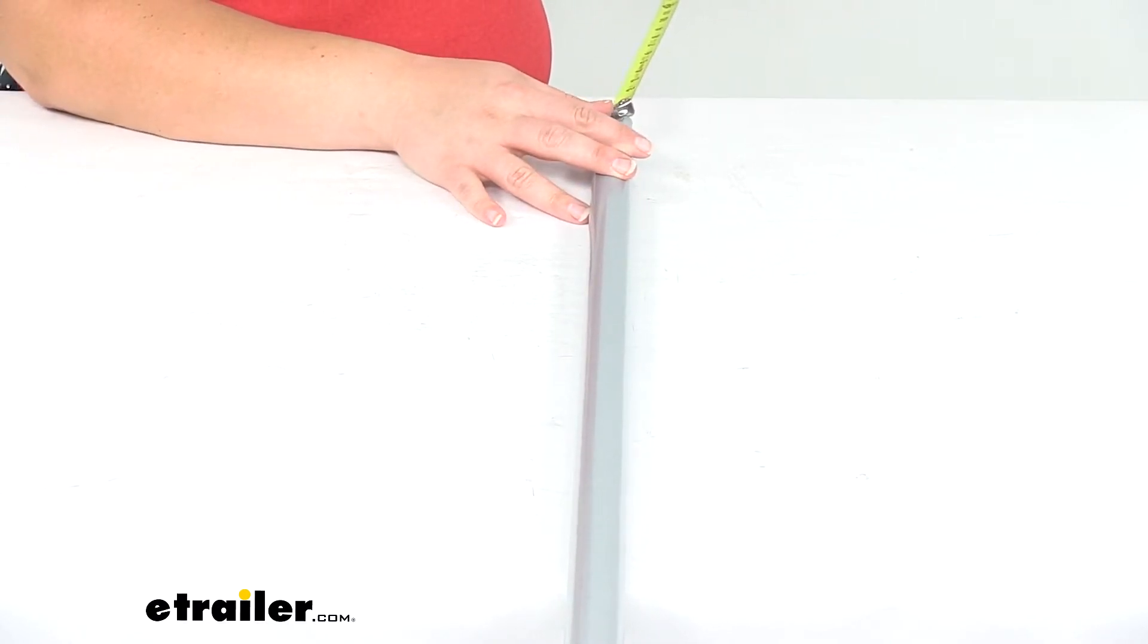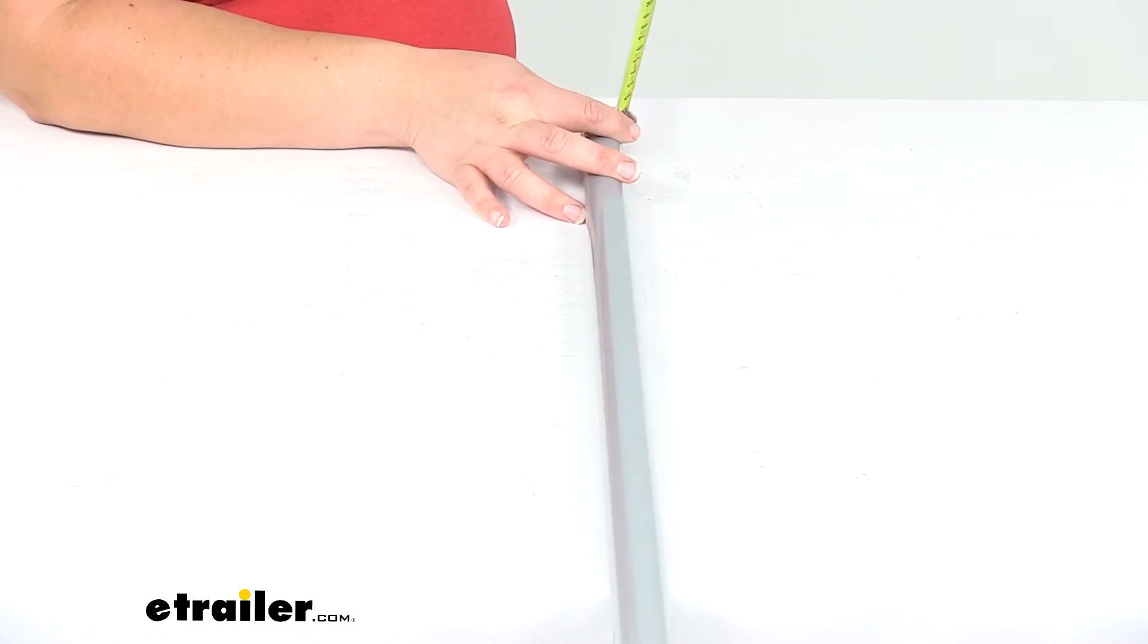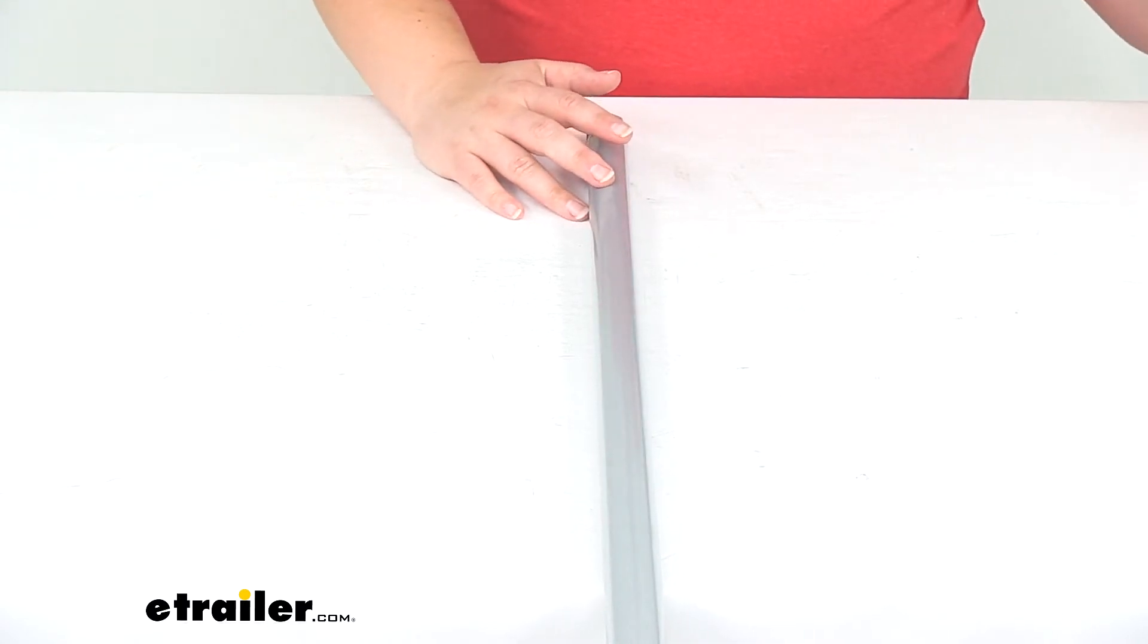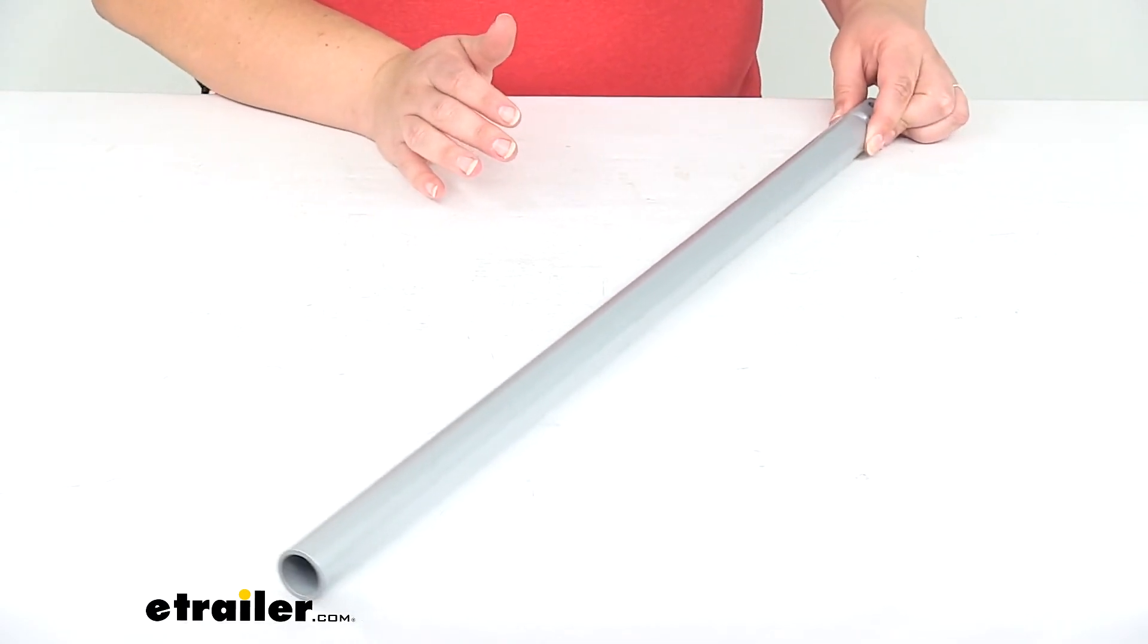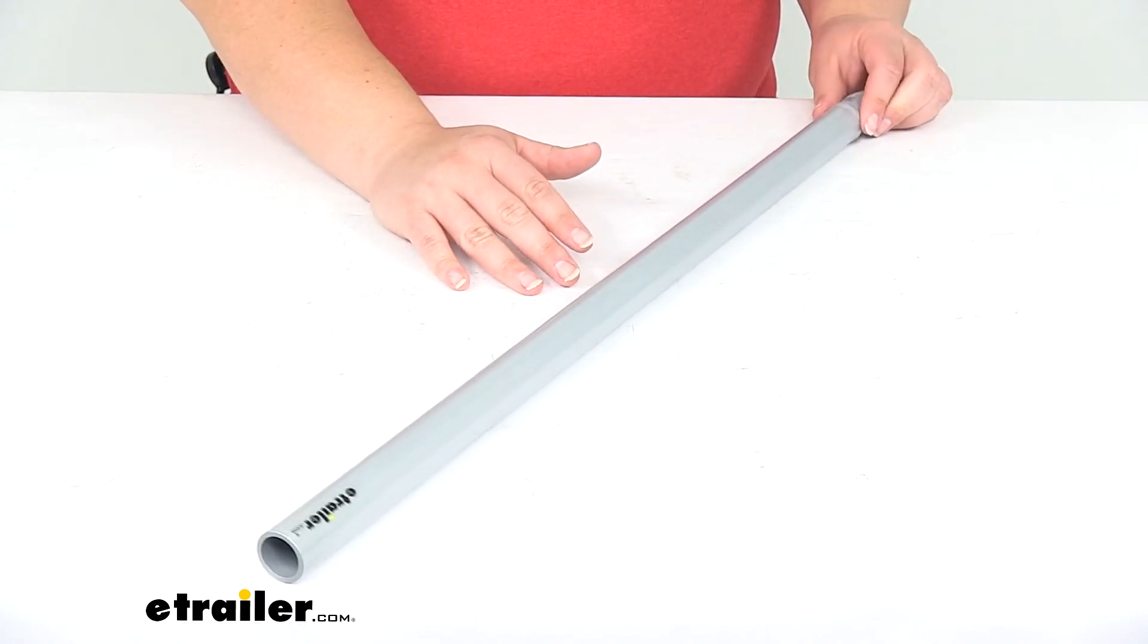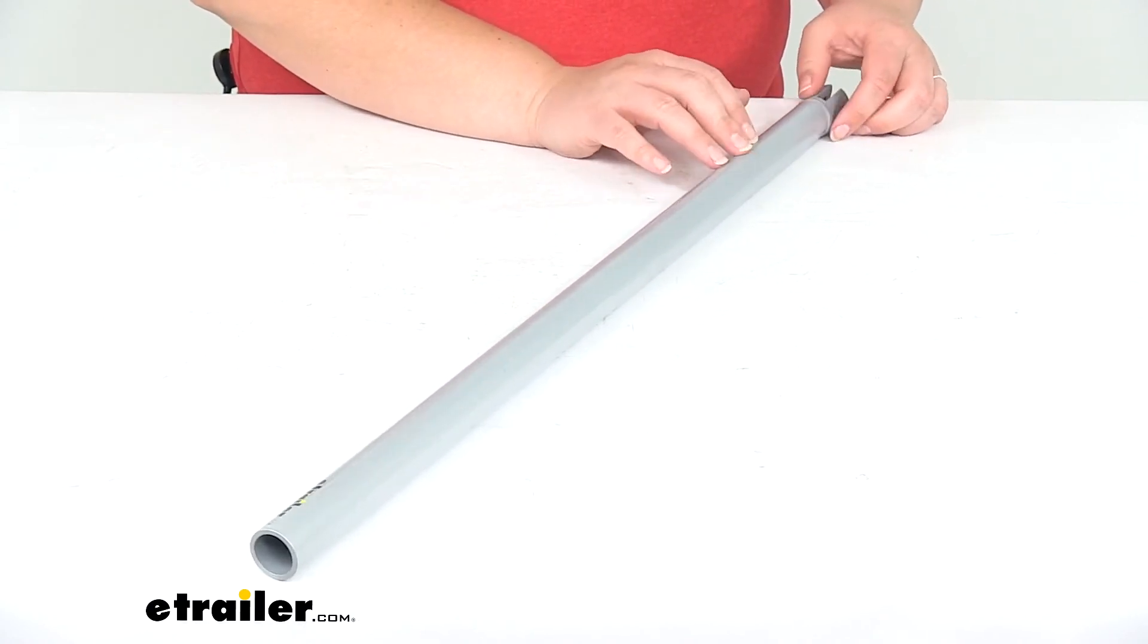And the hole diameter is just about three-eighths of an inch. So I just wanted to give you those measurements as reference, but this is going to be a direct replacement from Lippert components for your JT Strongarm Jack Stabilizer.